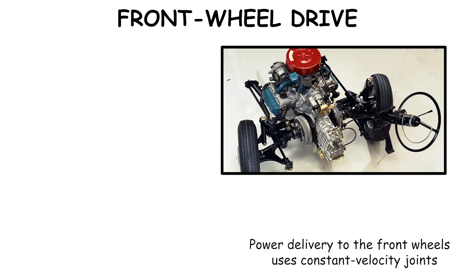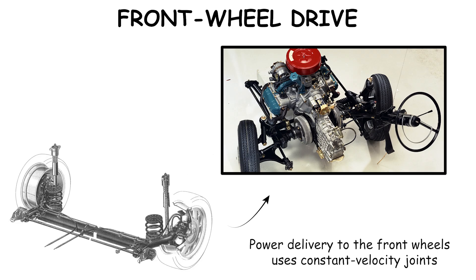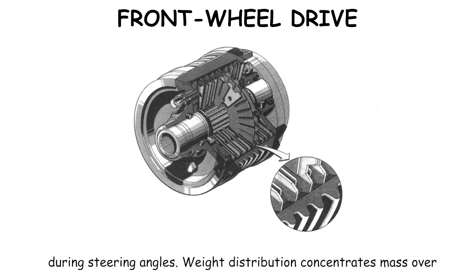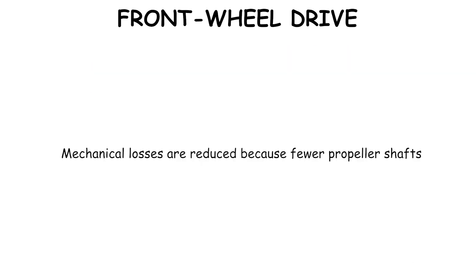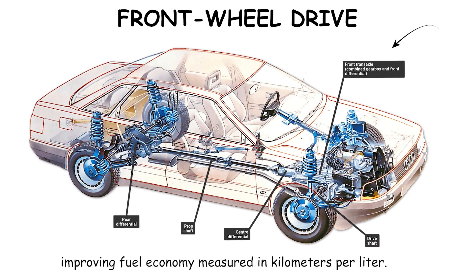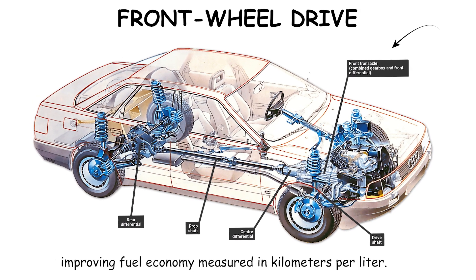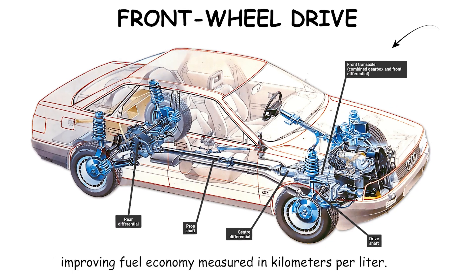Power delivery to the front wheels uses constant velocity joints to maintain uniform rotational speed during steering angles. Weight distribution concentrates mass over the driven wheels, improving traction on low-friction surfaces such as wet asphalt. Mechanical losses are reduced because fewer propeller shafts and differentials are required, improving fuel economy measured in kilometers per liter.